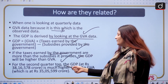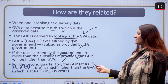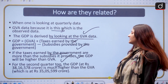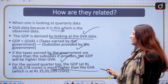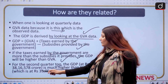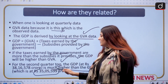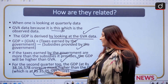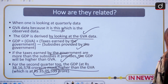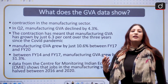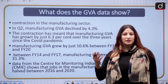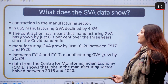If the taxes earned by the government are more than the subsidies provided, GDP will be higher than GVA — and this is what typically happens. For example, for quarter 2, the GDP is at ₹38,16,578 crore, which is much higher than GVA at ₹35,55,599 crore. GDP is higher because the government is earning much more in taxes than the subsidies it is giving away.